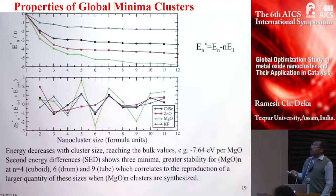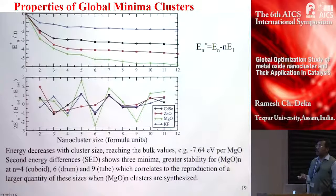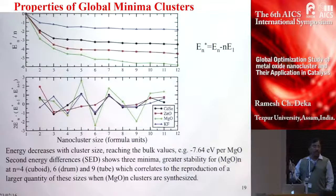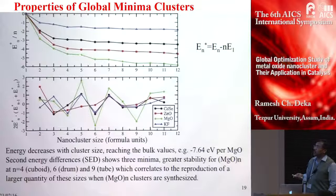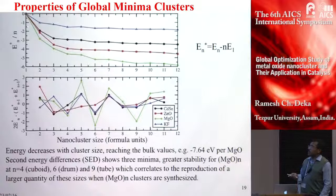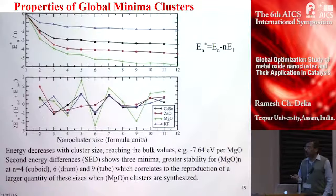Now we present properties of the global minimum structures. We plot the binding energy per formula unit, defined as E(N) minus N×E(1), where E(1) is the energy of one MgO or KF unit. This decreases with cluster size, approaching the bulk value of about −7.64 eV. Another property is the second energy difference (SED), defined as 2E(N) − E(N−1) − E(N+1), which describes stability.